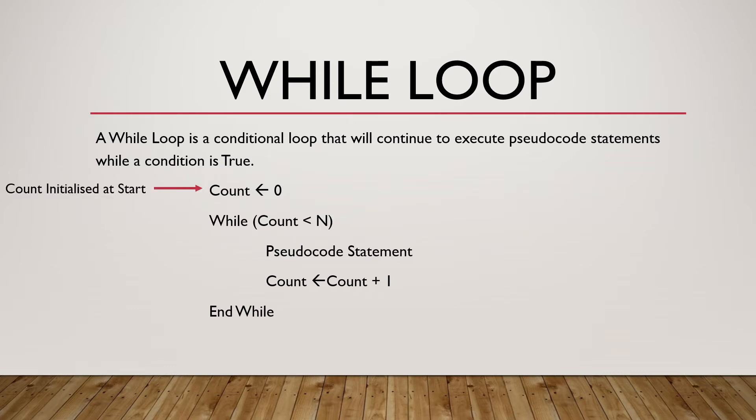Now in the while loop, we are going to have a count initialized at the start and this will be set to zero. The while indicates the start of the loop. Count less than N is a condition that is used inside our while loop. It's a condition that indicates the while loop will iterate N number of times.